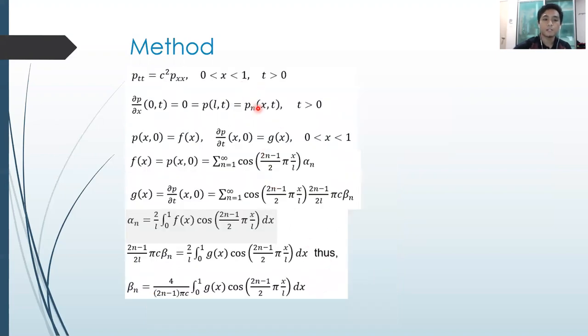For the third one, we can find the general equations of the pressure by applying the initial condition given to us. At the closed end, we'll have zero gradient of the pressure. At the open end, we will have fx and gx here. And then doing all the substitution, we will have this final equation.